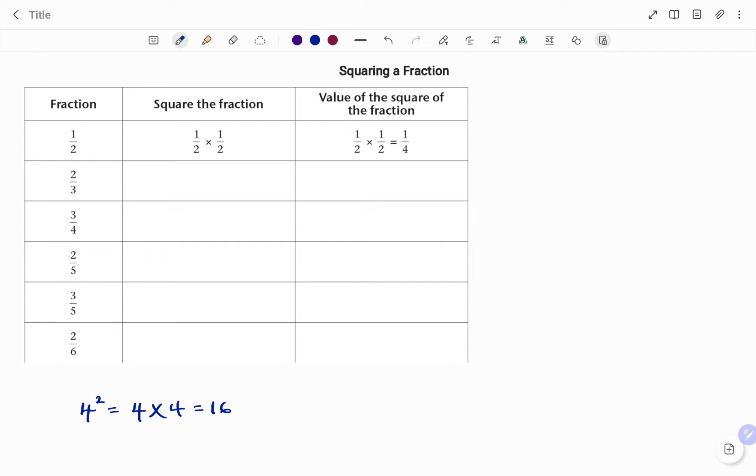We are to square 1 over 2, that will be 1 over 2 times 1 over 2, which is 1 over 4.